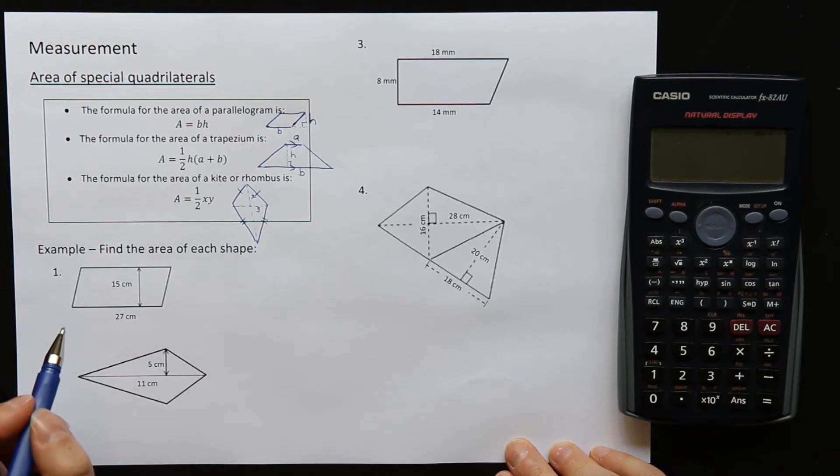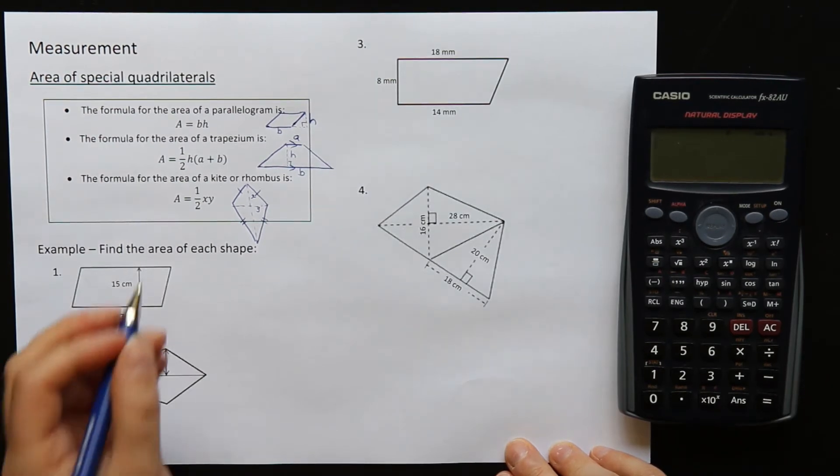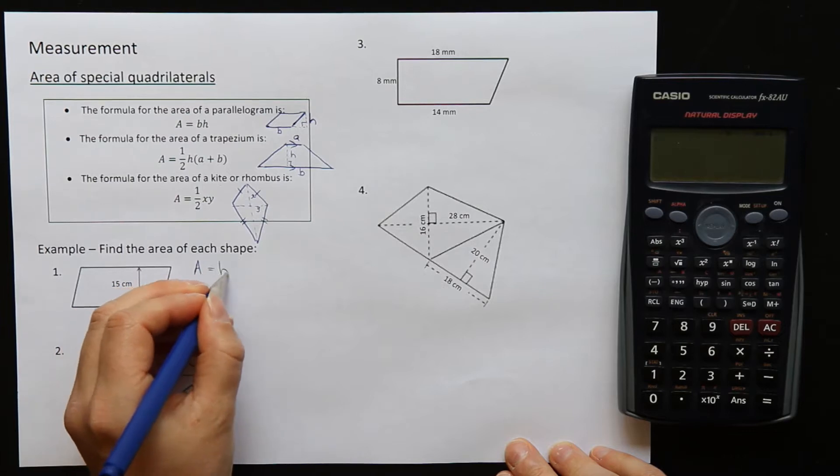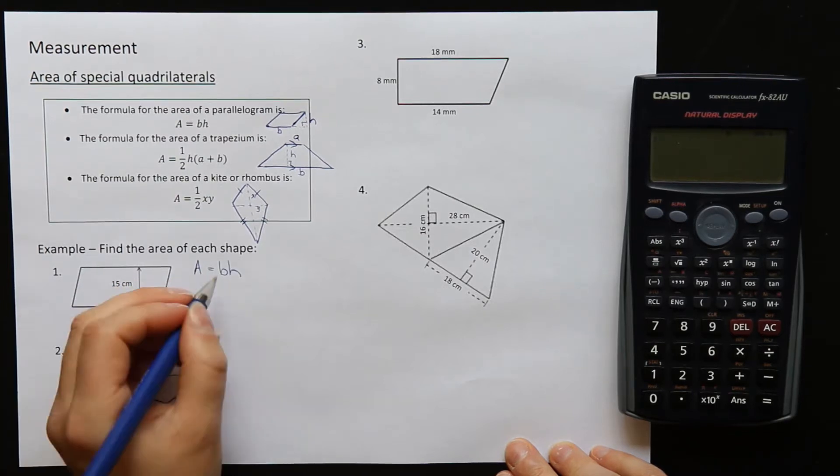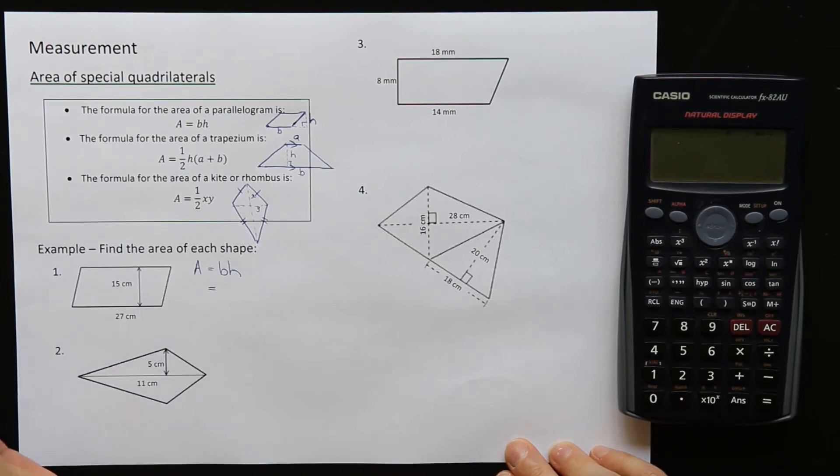Find the area of each shape. In question one we have a parallelogram. It looks a bit like a rectangle but it's pushed over, so it's not 90 degrees. Our formula is A is equal to BH, where B is the base and H is the perpendicular height, which is given here as 15.